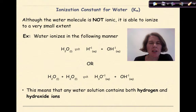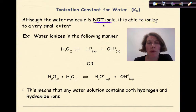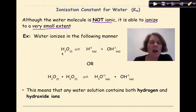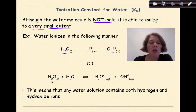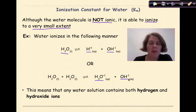Let's start out by talking about the ionization constant for water. Although the water molecule is not ionic, it is able to ionize or form ions to a very, very small extent. Water ionizes in the following manner. We can have H₂O liquid breaking down in a reversible reaction to hydrogen ions and hydroxide ions, or we can look at it in terms of two water molecules where one water molecule breaks down and donates its hydrogen to the other water molecule to make the hydronium ion and the hydroxide ion.